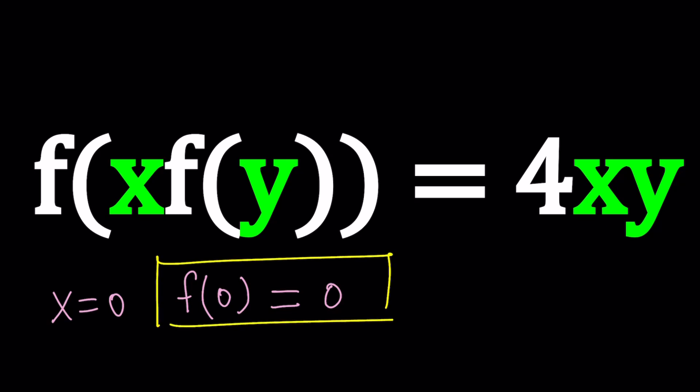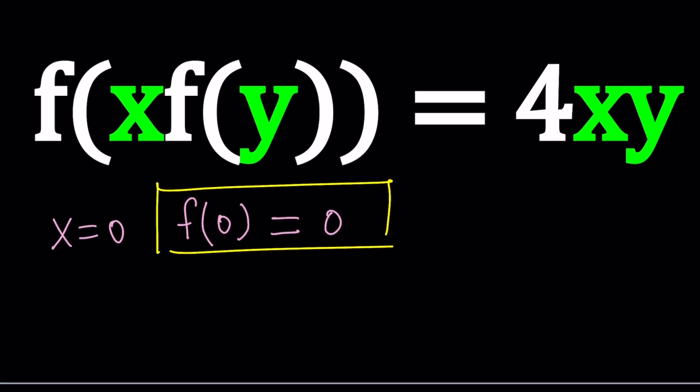Now let's go ahead and do something else. Maybe replace y with 0, because 0 is almost always a good number to use. And when I say replace y with 0 obviously x is going to just be x. So it's going to be f(x) times f(0) equals 4 times x times 0 which is 0 again. Interesting right.